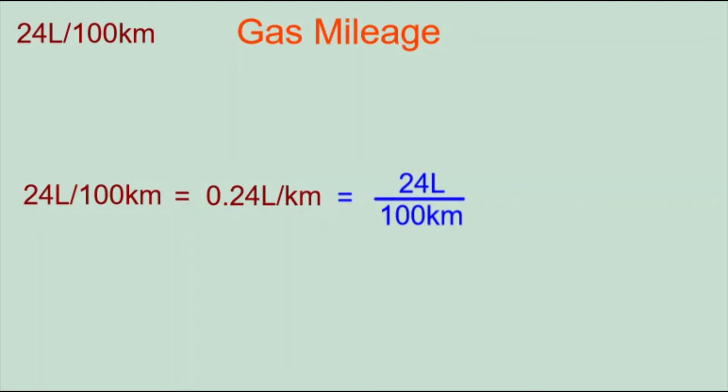Another way of expressing it is 24 liters over a hundred kilometers — making it look like a fraction where liters is on top and kilometers is on the bottom. This form becomes useful later.